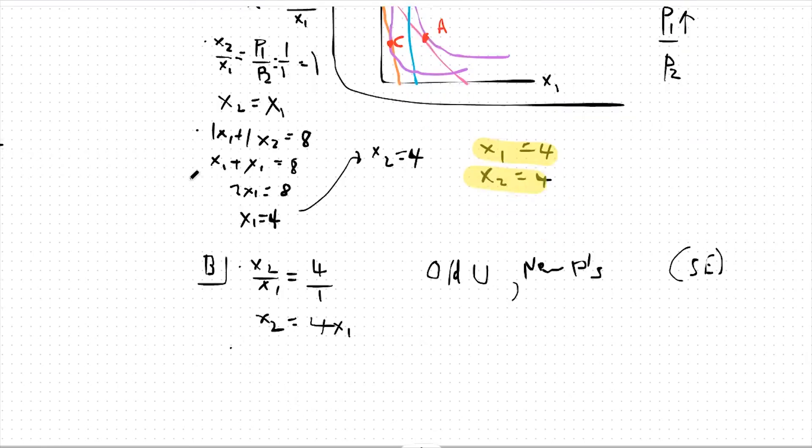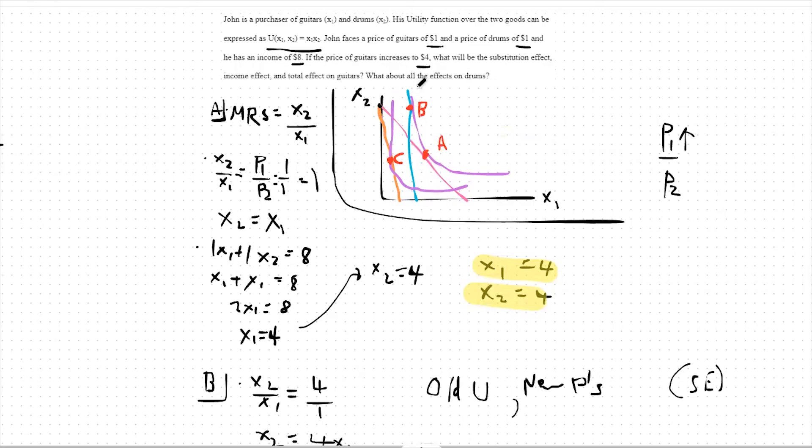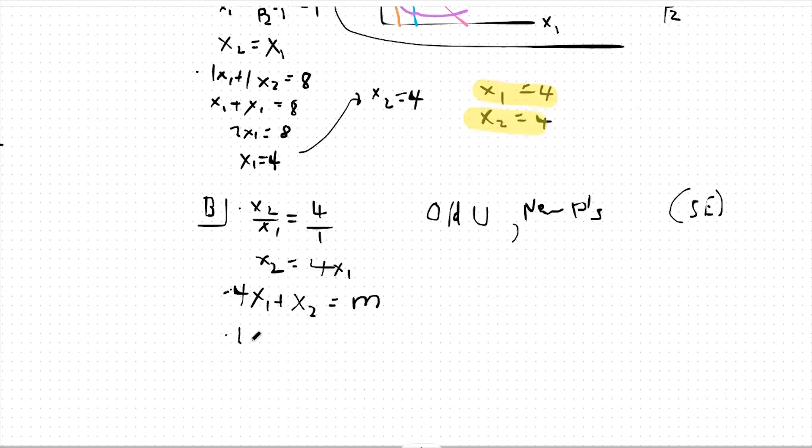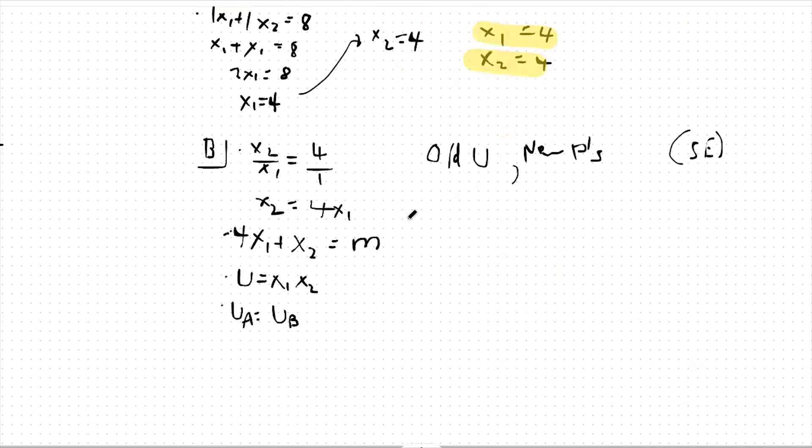Given that identity, we can go to our budget constraint and say 4x1 plus 1x2 equals our income. With point B, we invented an income to make this point purchasable. As such, we're not quite sure what our income is and we will have to leave it as a variable. That means even if we were to plug in 4x1 for x2, we still wouldn't be able to solve for x1 or x2. This means we're going to have to turn to a different function, that being our utility function. We know that utility is equal to x1 times x2.